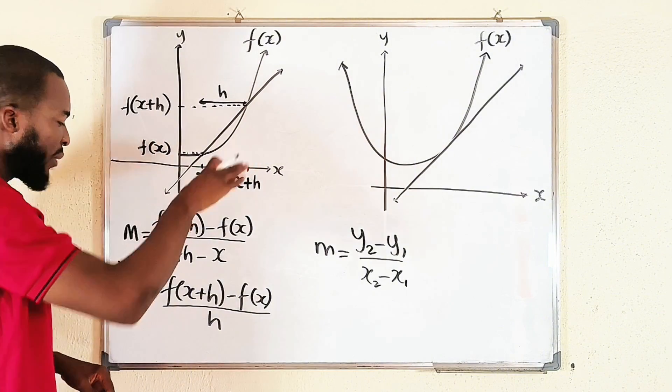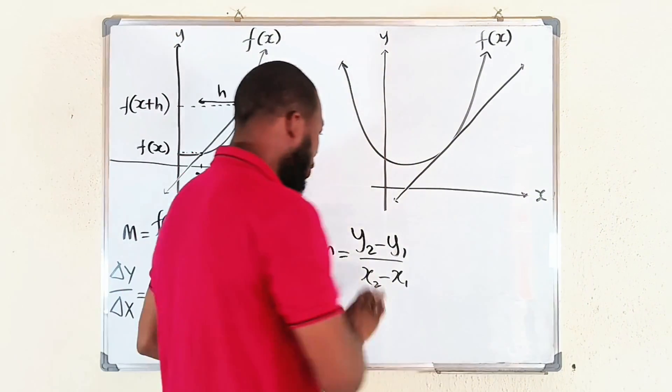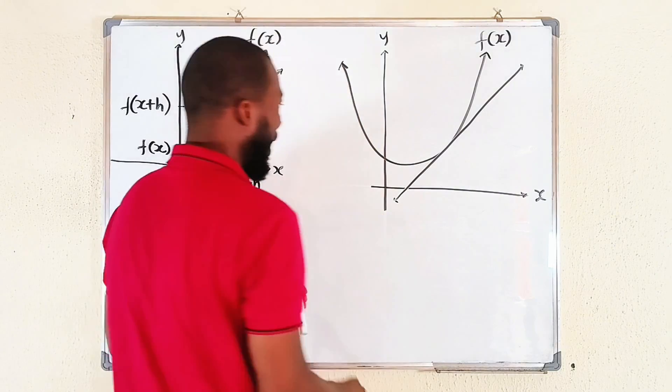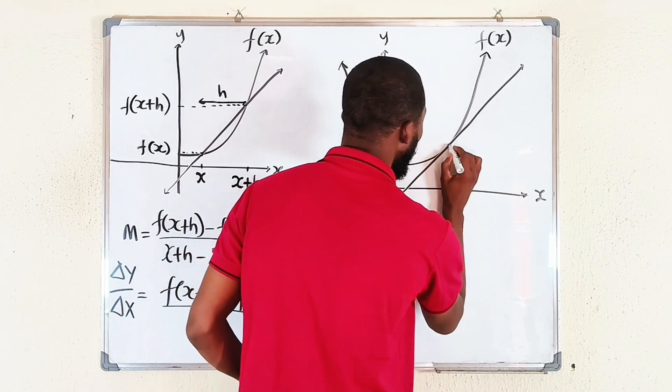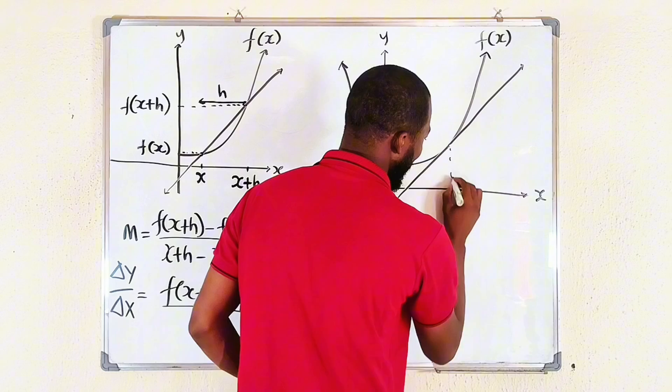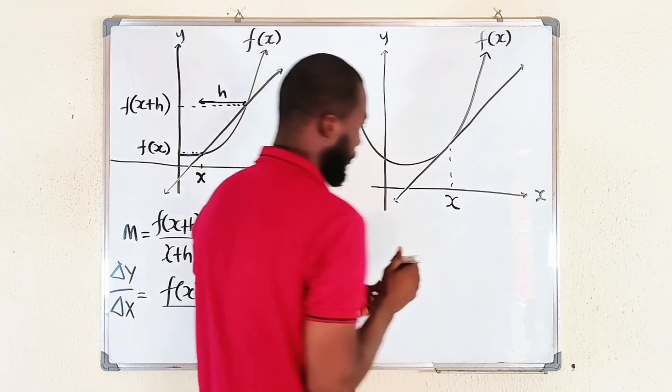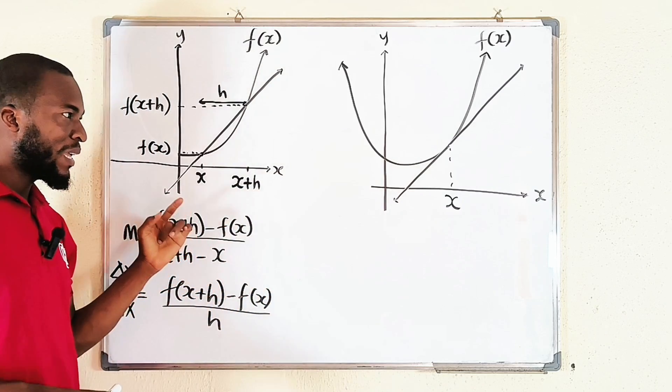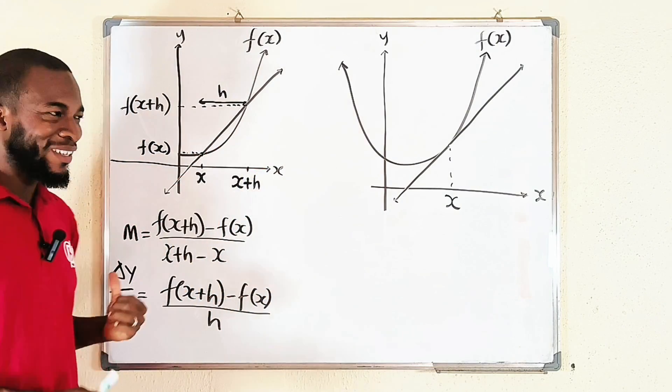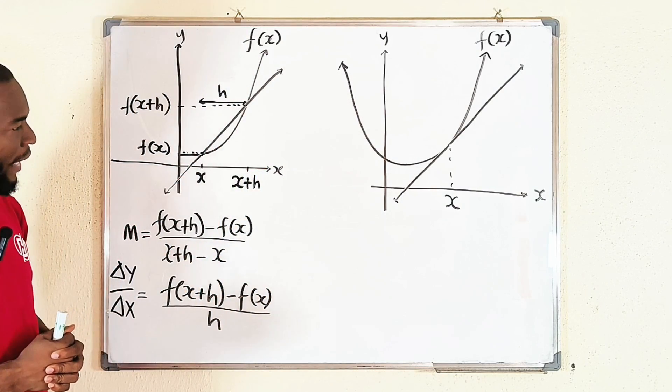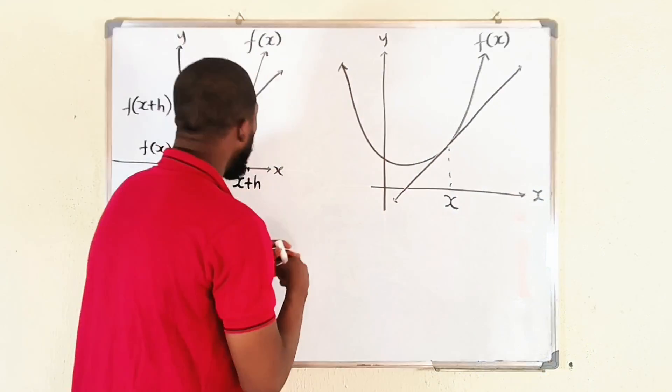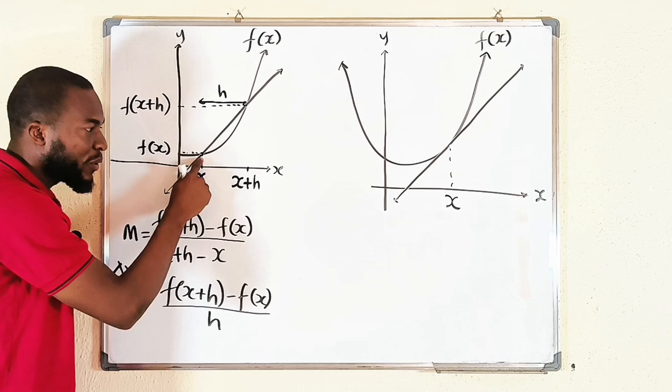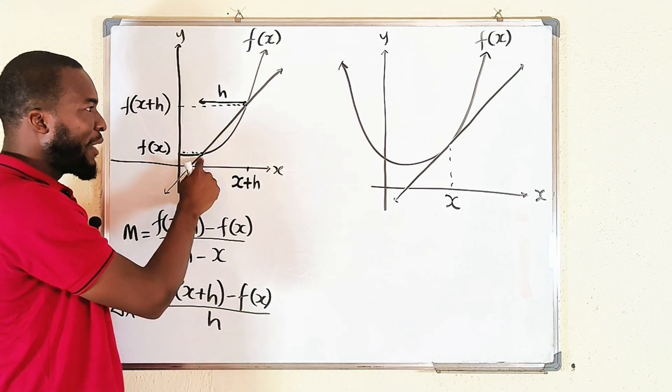But coming down here, what happened? Because here we have only a single point. Let's call it x. How do we calculate the slope here? Because it has to be change in x divided by the change in y. Well, if you relate the two, you may decide to bring this point closer and closer to this particular point.